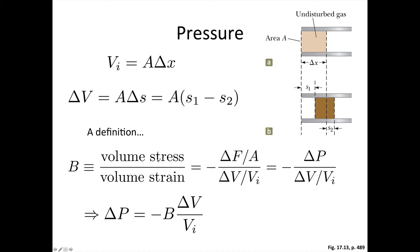Now the volume stress is equal to the change in force over the cross-sectional area. And as we've seen before, a force divided by an area is a pressure, so that's equal to the change in pressure. And the volume strain is equal to the change in volume divided by the initial volume. And we've got a minus sign here as well.